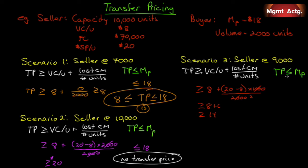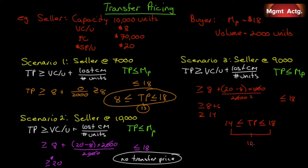The transfer price must be greater than or equal to $14 from the seller's perspective. From the buyer's perspective, as long as the price is less than or equal to $18, we have a deal. So the transfer price must be less than or equal to $18 but greater than or equal to $14. Whenever you have a range, it's in Division A's best interest when it's over $14, in Division B's best interest when it's under $18, and if it's in both divisions' best interest it's in the company's best interest. Find the midpoint — $16 — that will be the transfer price when there is some idle capacity.